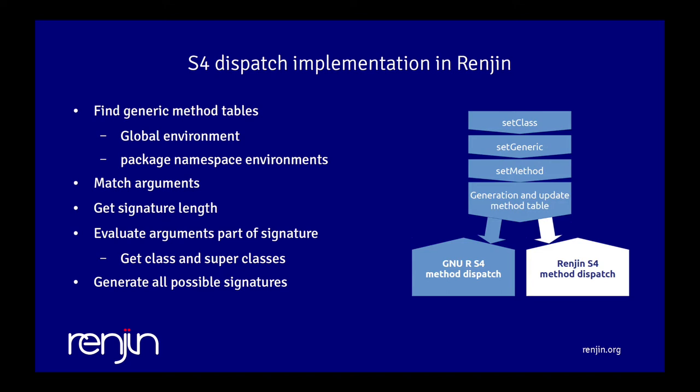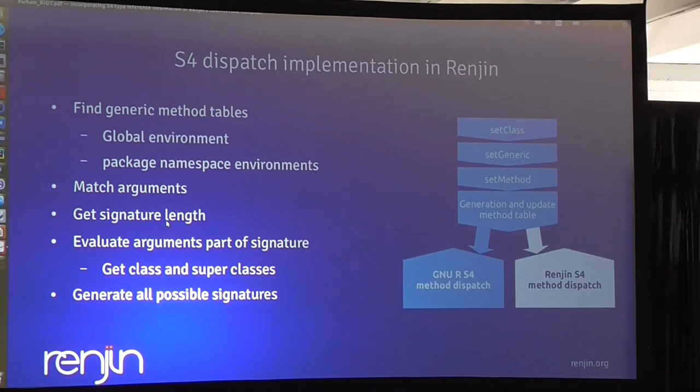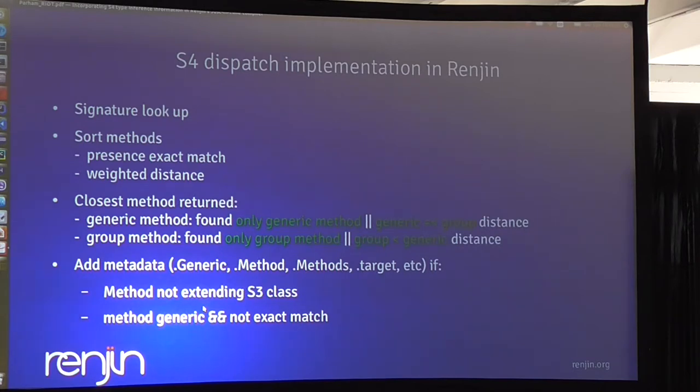We look for the method table basically, because based on the function name we know what the method table should be. Then we look first in global environment, then package namespaces. Then we match the arguments of our input with the formal arguments of the method definition that we have found. We get the maximum signature length based on the signature, and then we evaluate only the parts that are part of the signature, get the classes, and generate all possible signatures. Then we do a signature lookup.